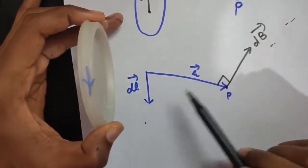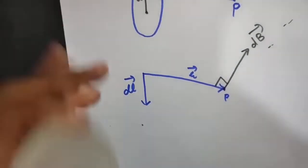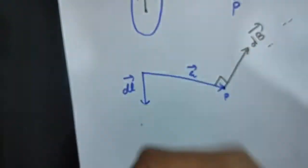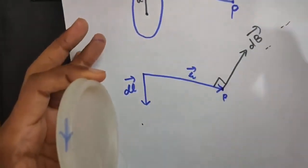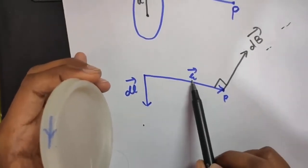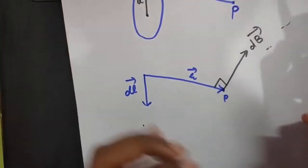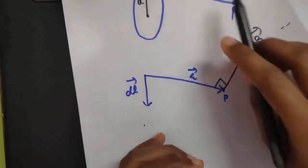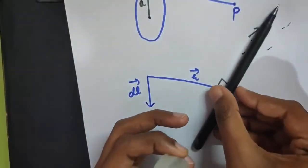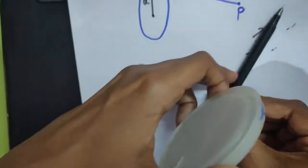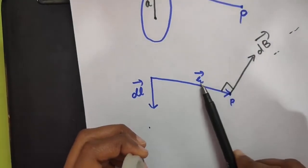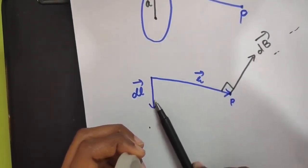To calculate the direction of magnetic field again by using the right-hand thumb rule: put your fingers in the direction of DL and curl towards R. The thumb points upwards. Remember that B should be perpendicular to DL as well as R. Drawing it so it is perpendicular to R as well — DB is upwards but perpendicular to R as well as DL.